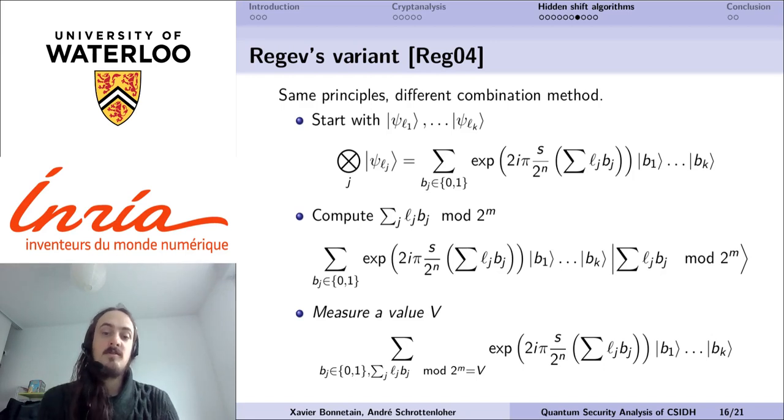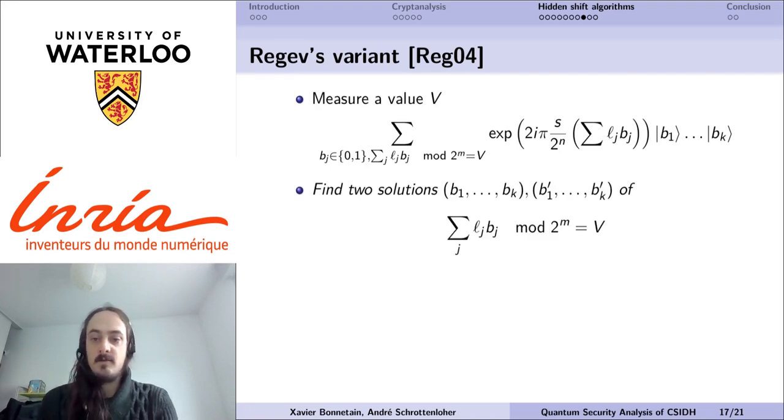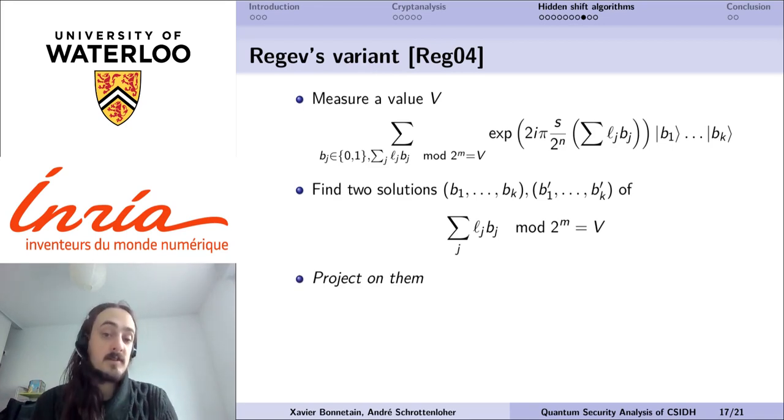From that, what we can do is to extract two values in the superposition that have the correct phase. We can do this classically because all the values are classically known. Once we've done that, then we can project on these two values.